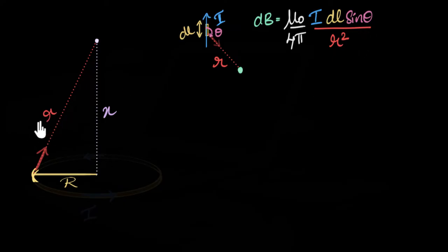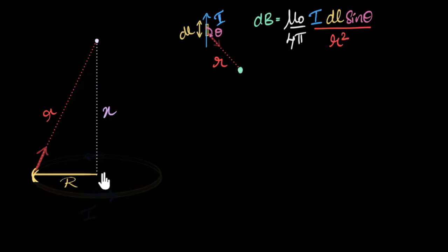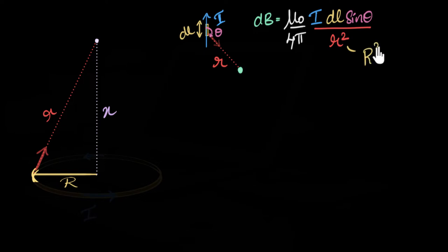Can you tell me what the value of R is just by looking at this diagram? Here's a right-angled triangle, so Pythagoras' theorem tells me R squared should equal capital R squared plus X squared. So we get that right away — R² = R² + x².